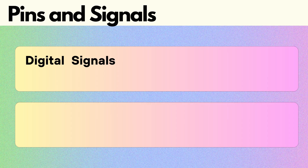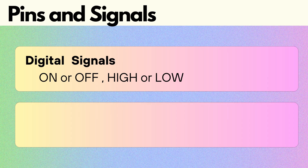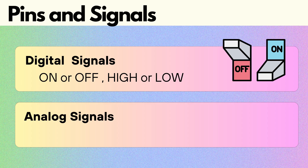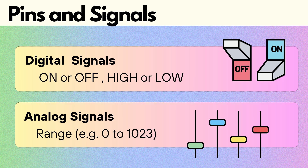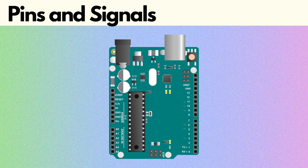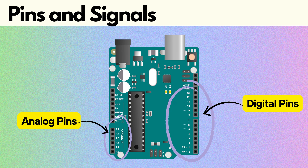Digital signals have two states — on or off, or high or low — and this is like flipping a switch. Analog signals represent a range of values and can vary, and we can use this data to do things like changing the brightness of an LED. As you can see from the board, there are a total of 20 physical pins: six on the left with the letter A from A0 to A5, which we call analog pins, and 14 on the right from 0 to 13, which we call digital pins. To understand how these physical pins, the data direction, and the types of signals all work together, let's look at this table.